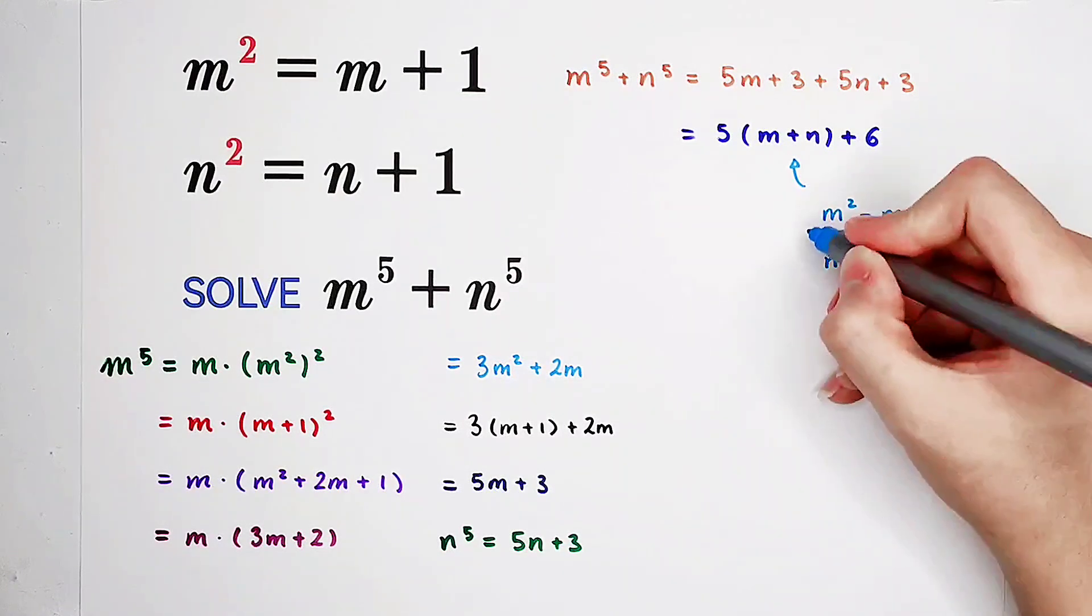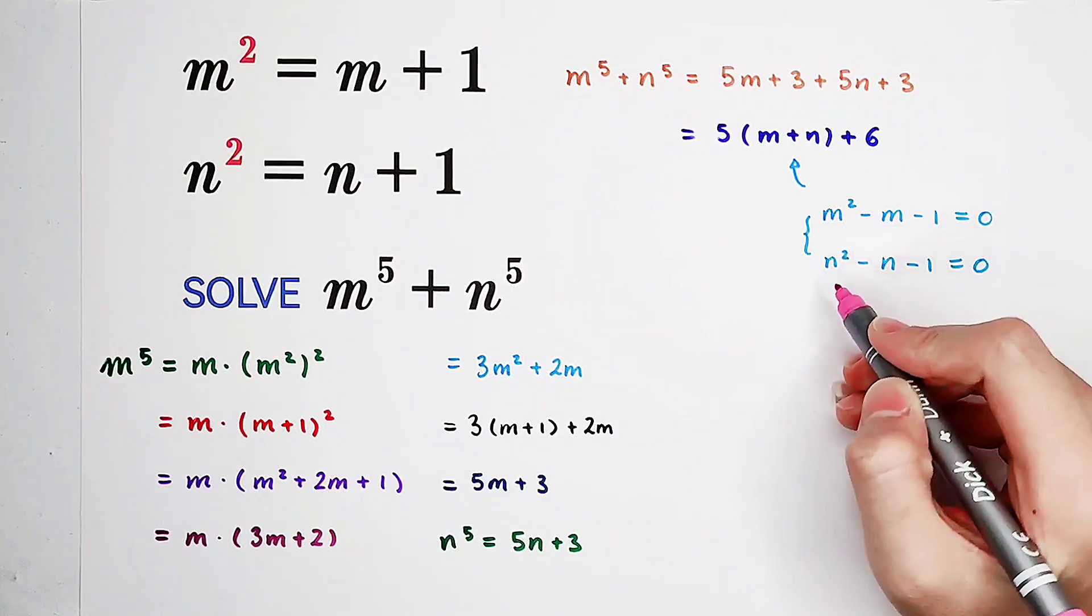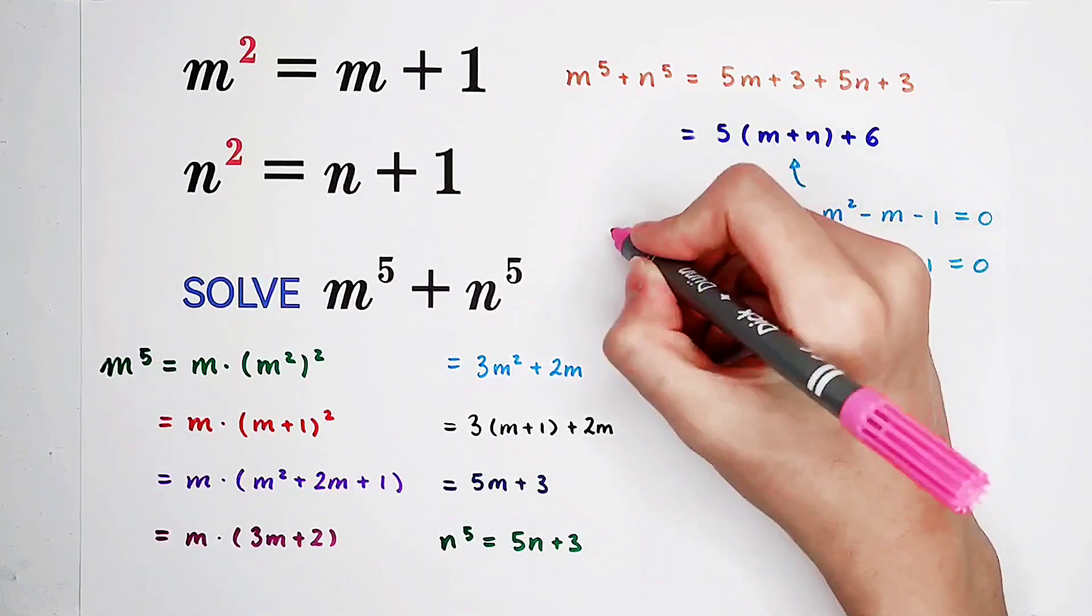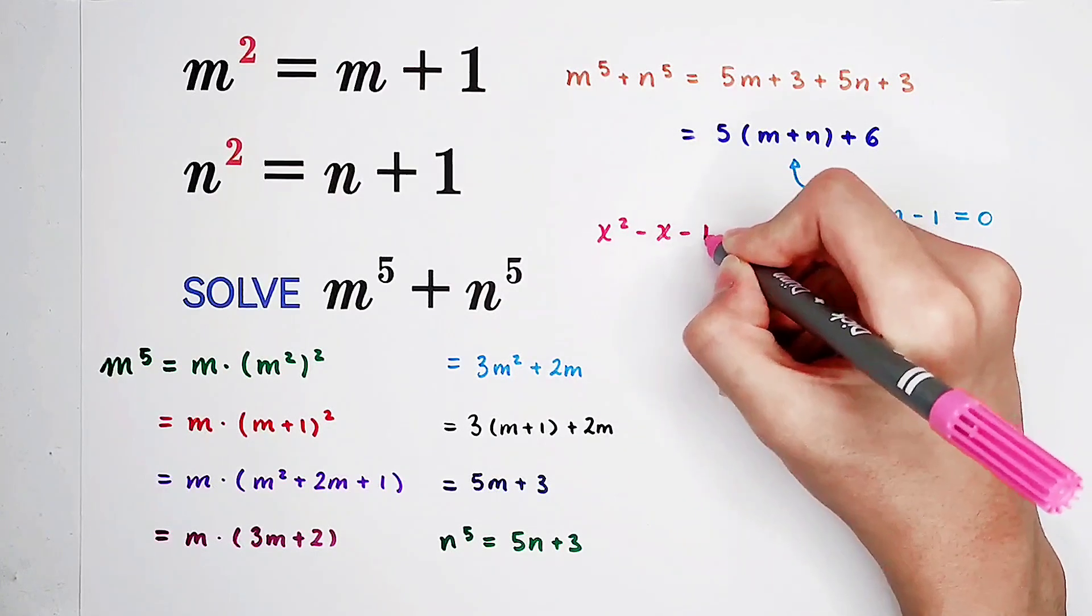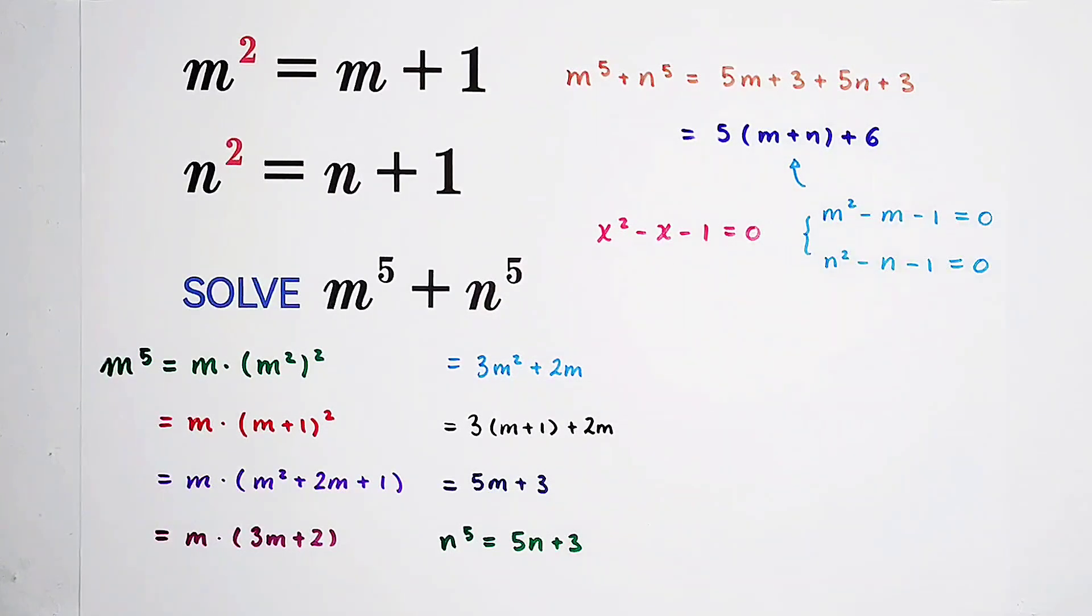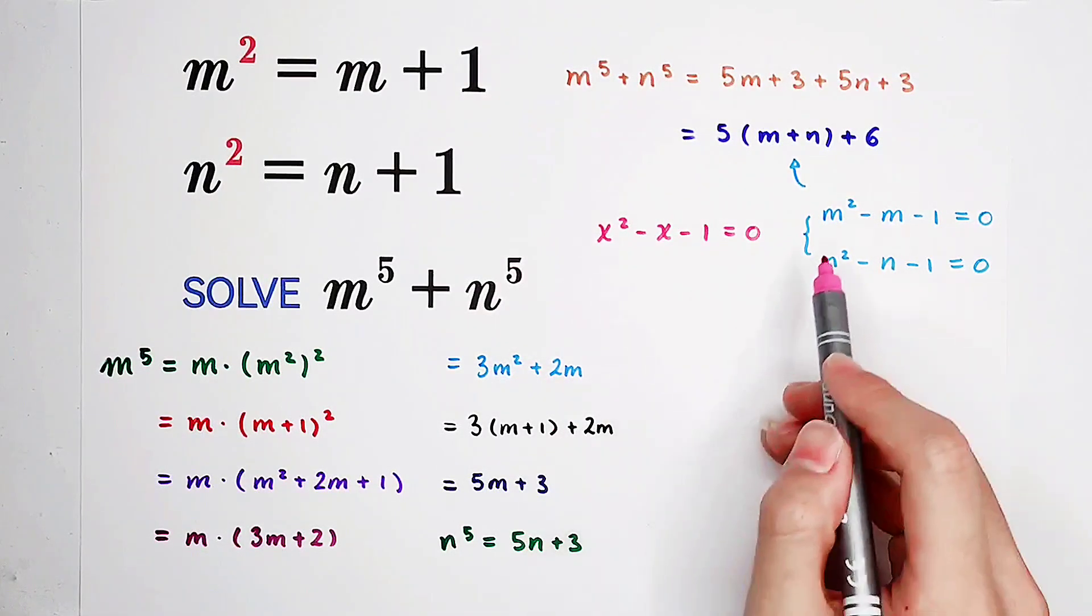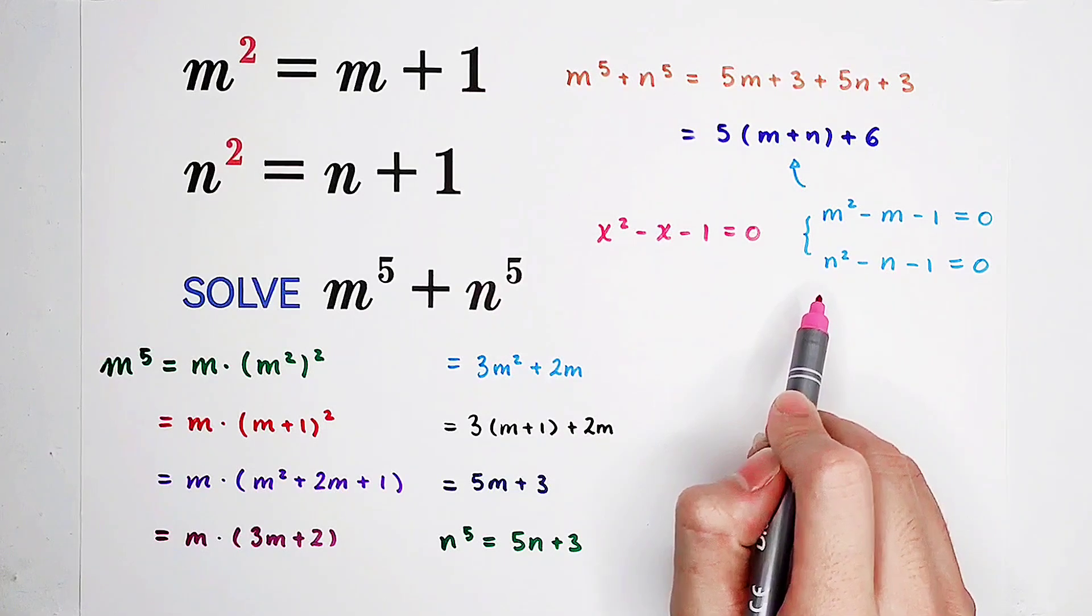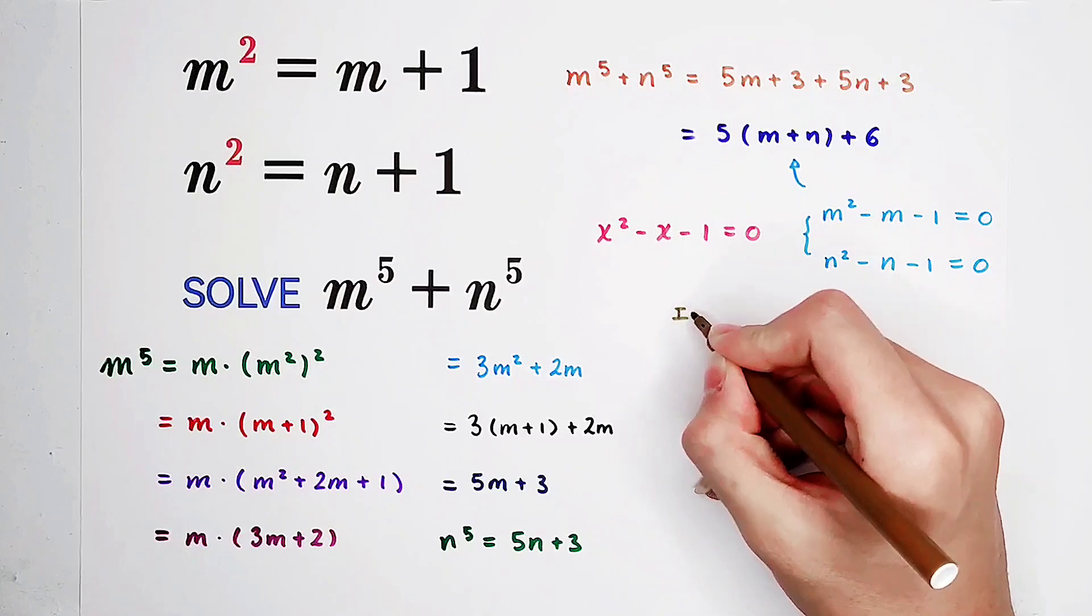So now we can see that these two equations have the same form. Now what do I mean? If they have the same form, I can say m and n are the two roots of the equation x squared minus x minus 1 equals 0. So m and n are the roots of this equation. However, m and n can be equal. They can also be different. There are two cases.